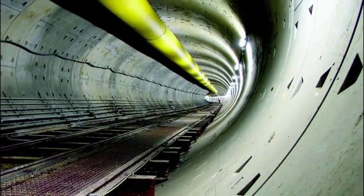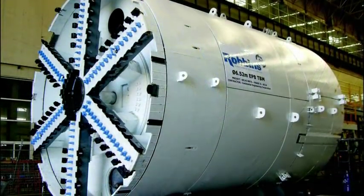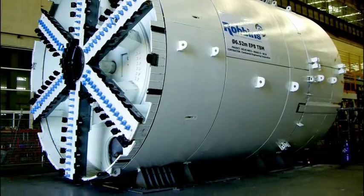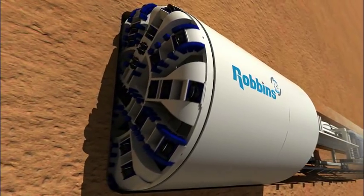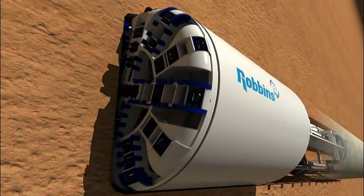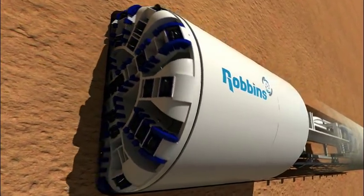Since inventing the first hard rock tunnel boring machine more than 50 years ago, the Robbins company has expanded its tunneling capabilities to include soft ground. Today, Robbins provides earth pressure balance machines known as EPBs for projects around the world.